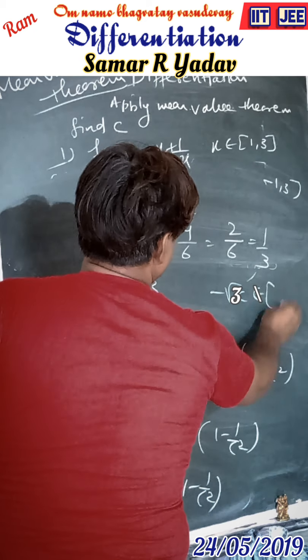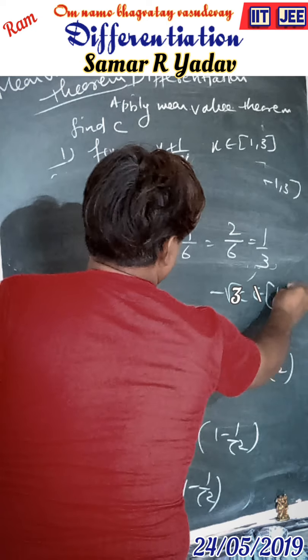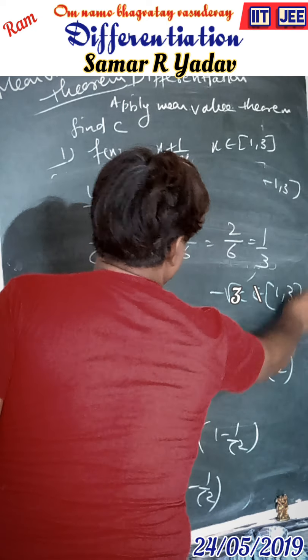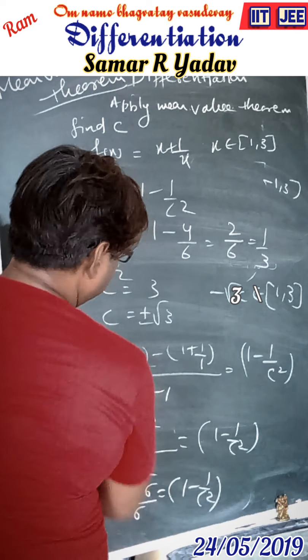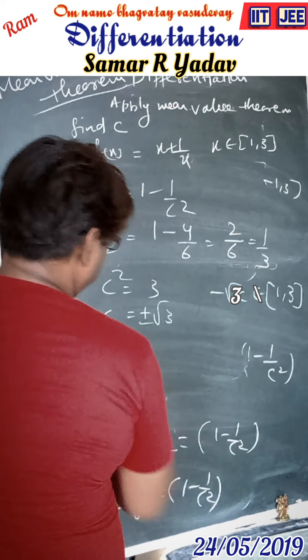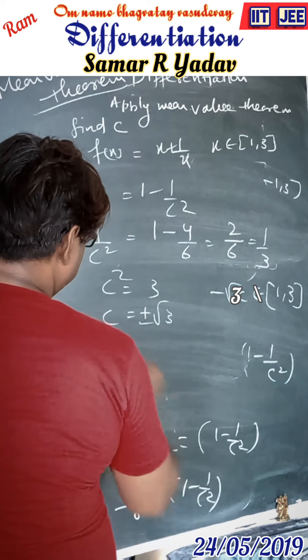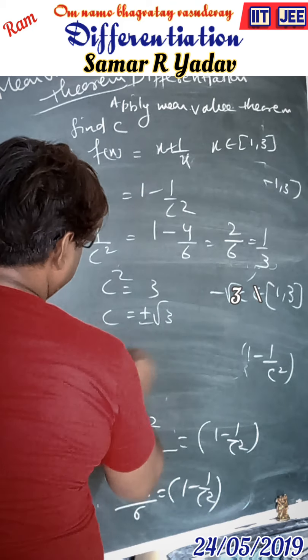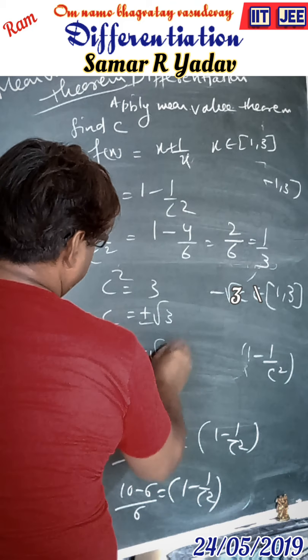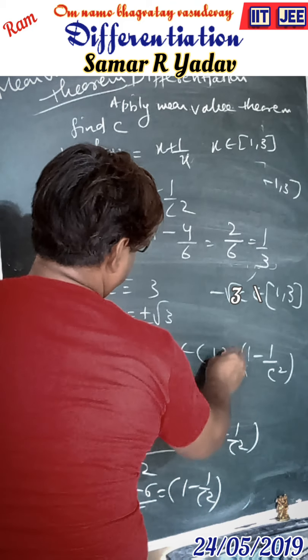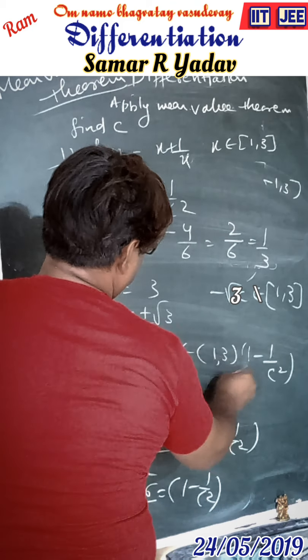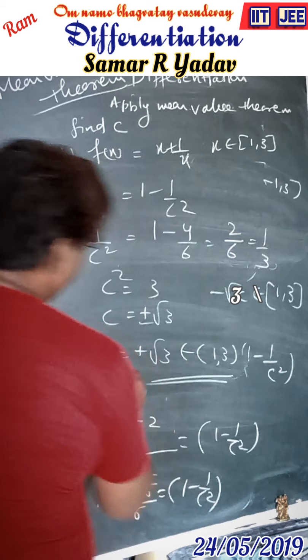Therefore, c² = 3, so c = ±√3. Since -√3 does not belong to [1, 3], we take c = +√3, which belongs to [1, 3]. This is the value of c.